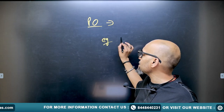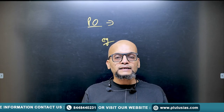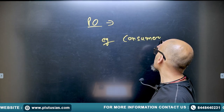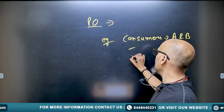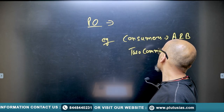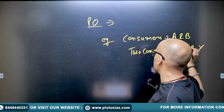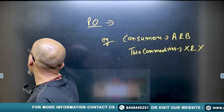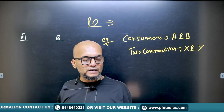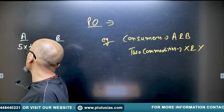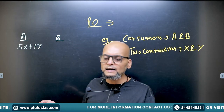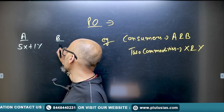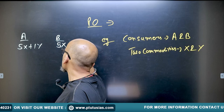Let's take an example. We have two consumers, A and B, and two commodities, X and Y. A's consumption function is 5X plus 1Y — a random example. B's consumption function is 5X plus 4Y. Now remember that resources are limited. Commodity X has a total of 10 units.